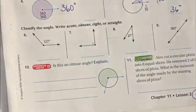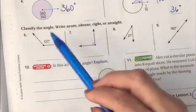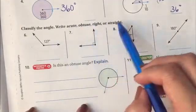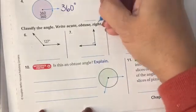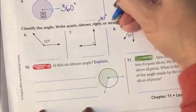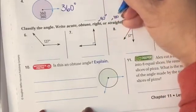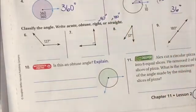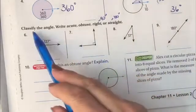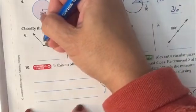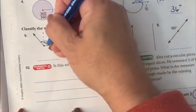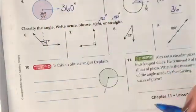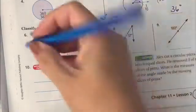Now we're going to go ahead and look at those angles. So classify the angle. Write acute, obtuse, right, or straight. Well, I know right away that a right angle is 90 degrees. And I know a straight angle is 180 degrees. So I'm going to kind of put that up here on my notes. So I see this one right here. It's 127 degrees. I know a right angle would look like this. So I'm like, this is greater than 90 degrees. It's 127 degrees. So it must be obtuse.